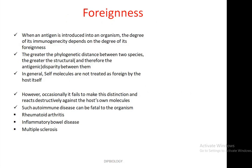Foreignness is an important characteristic of an immunogen. When an antigen is introduced into an organism, the degree of its immunogenicity depends on the degree of its foreignness — whether the molecules come from the body's own origin or from outside. The greater the phylogenetic distance between two species, the greater the structural disparity between them, meaning antigens of distantly related origin are more foreign.